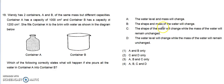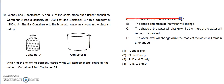Let's take a look at the options. Option A: the water level and mass will change. When she pours all the water in container A into container B, the water level will change but the mass will not change because the volume of water remains the same. So A cannot be the correct option.